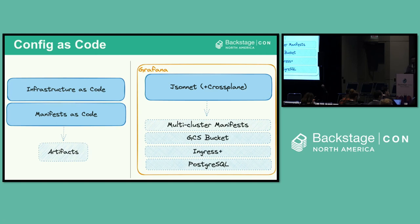So no more Terraform. We use Crossplane to define buckets for TechDocs, define DNS mappings for container-native load balancing for ingresses on GKE, and define PostgreSQL instances including configuring the database, user accounts, and permissions. Since all this is defined in Jsonnet, we can easily reference objects and provide a tighter relationship between deployment and cloud resources.